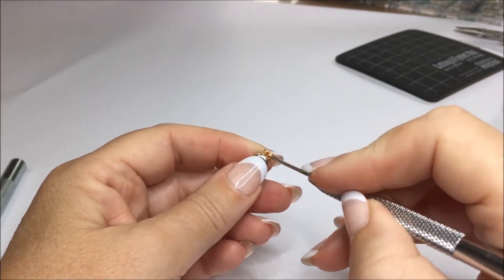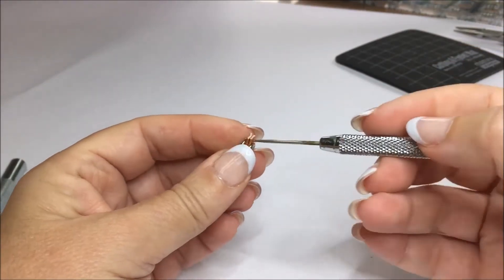Now take the needle tool and pierce a hole above the top rivet, making sure you go through both layers.